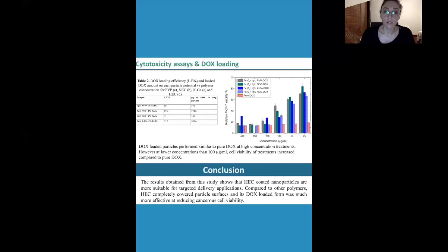The result was that even though each polymer was effective enough at higher concentrations to kill cancer cells, hydroxyethyl cellulose coated particles were much more suitable for targeted delivery applications compared to other polymers. The hydroxyethyl cellulose completely covered the particle surfaces and loaded doxorubicin successfully.